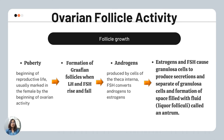Ovarian follicular activity occurs in waves characterized by follicle emergence, growth, and regression. Starting with puberty — the beginning of reproductive life — usually marked in the female by the beginning of ovarian activity. It is followed by the formation of Graafian follicles when LH and FSH rise and fall. Androgens produced by cells of the theca interna are converted by FSH to estrogens. Estrogens and FSH cause the granulosa cells to produce secretion, and separation of granulosa cells leads to formation of the fluid-filled space called the liquor folliculi — the antrum.